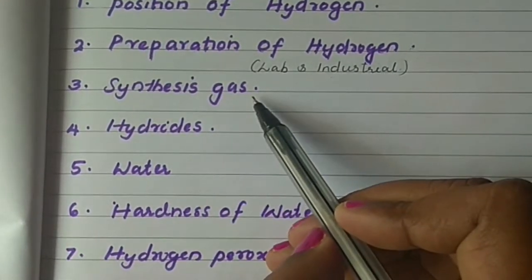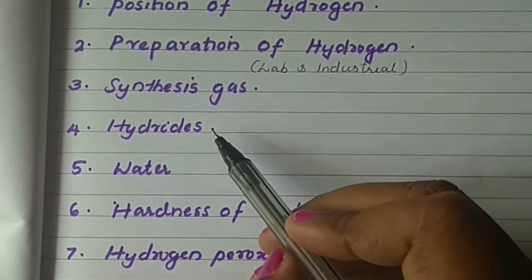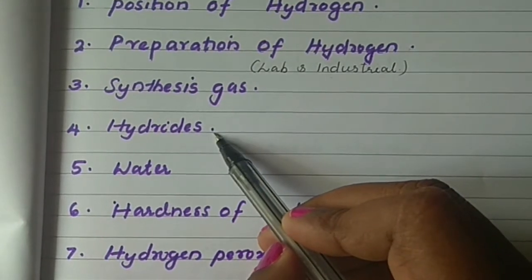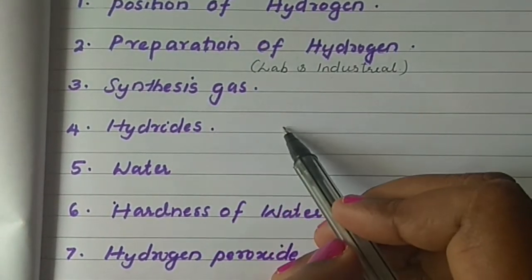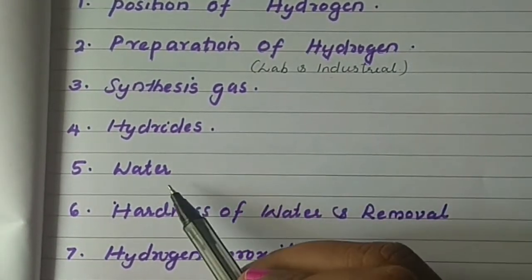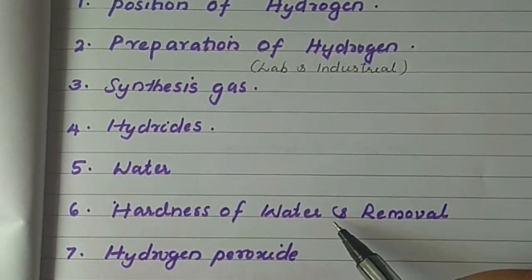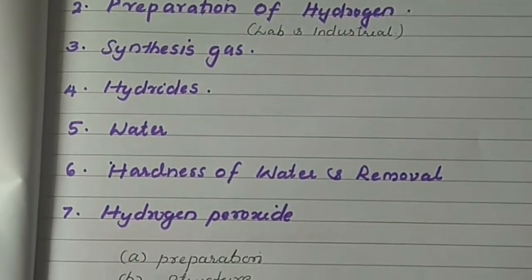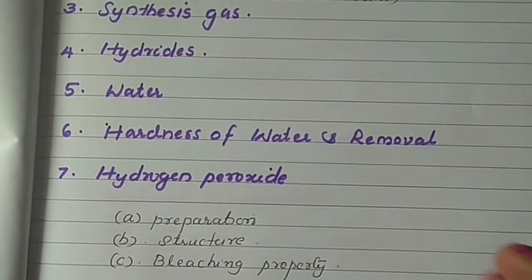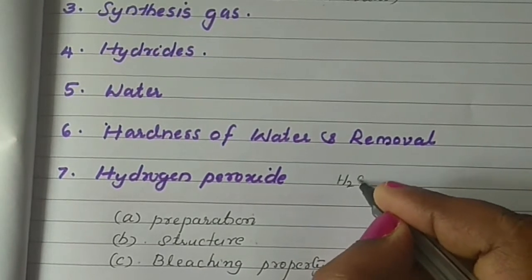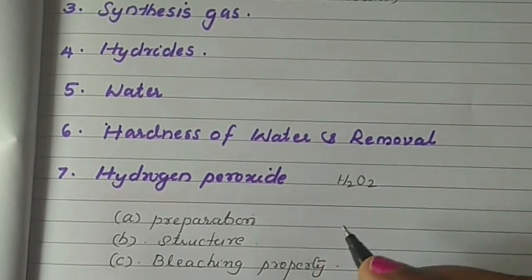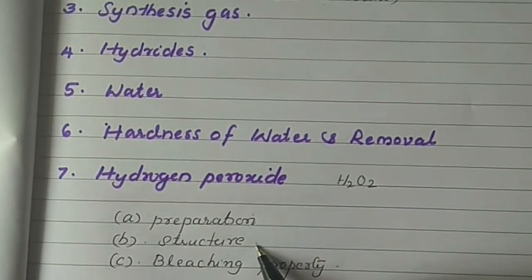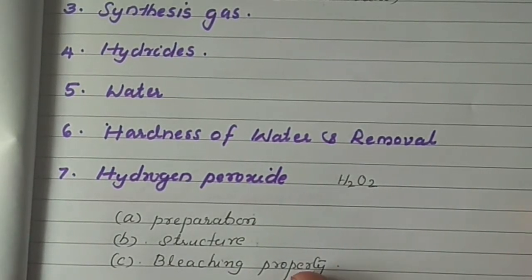The chapter topics include: preparation of hydrogen — that is lab preparation or industrial preparation — then synthesis gas, hydrides, binary compounds of hydrogen with other elements, water (H2O), hardness of water and its removal — that is very important — and the 7th point is hydrogen peroxide (H2O2), including its preparation, structure, and main properties such as bleaching.